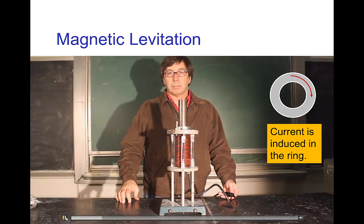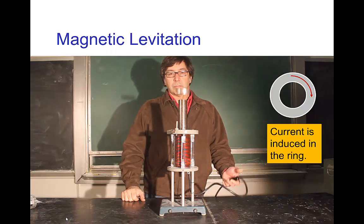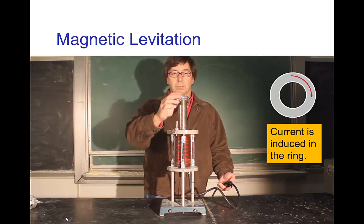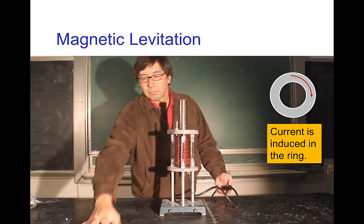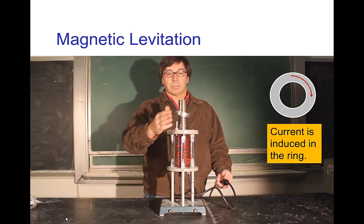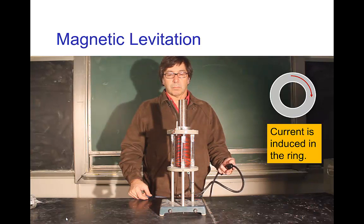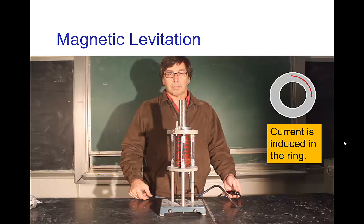I put that ring of metal, and now I turn on the magnet, and you see that there is now a repulsion between the AC electromagnet and this ordinary ring of metal. So as I said, there's a current that goes through the ring of metal. If you touch that ring, you'll see that it actually got hot, and that current produces the secondary magnetic field that causes the levitation.